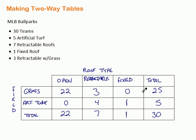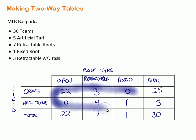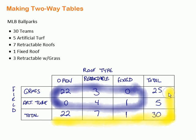There's some terminology for the different numbers in this table. The numbers inside the table are called joint frequencies — they describe how two categories intersect. The numbers on the outside edges — the row and column totals — are called marginal frequencies. They're easy to remember because they sit on the margin, at the edge of the table.